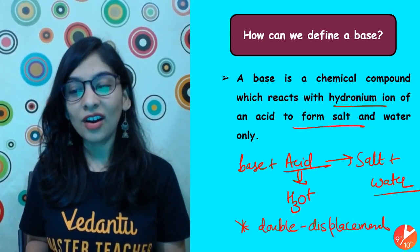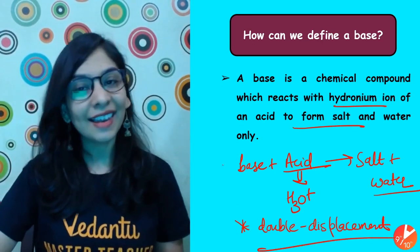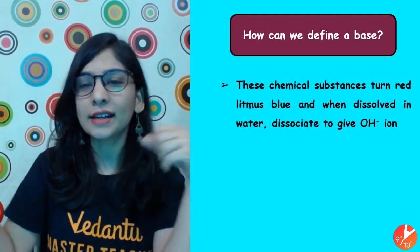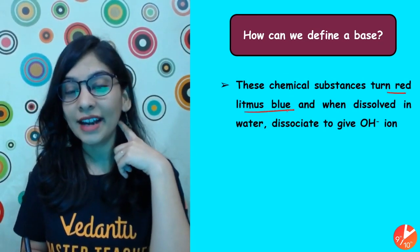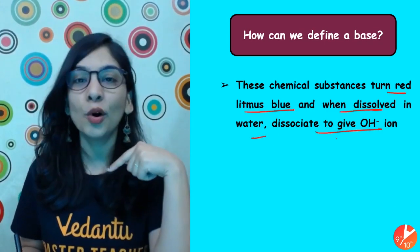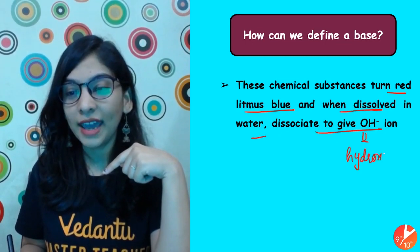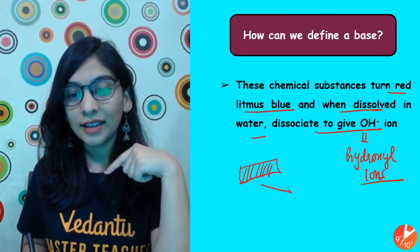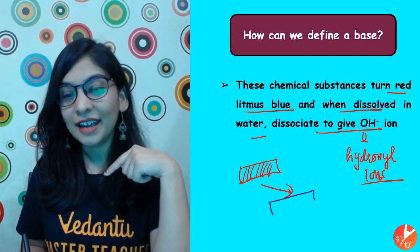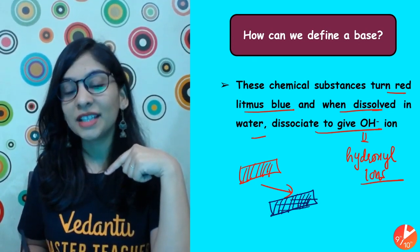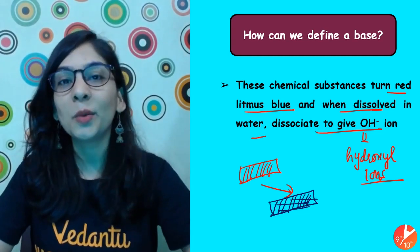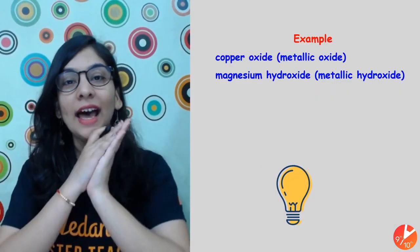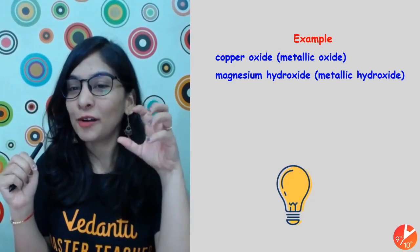It's a double displacement reaction because they exchange their ions. These are chemical substances that turn red litmus blue. When they dissolve in water, they generally give OH⁻ ions, called hydroxyl ions. If I take a red litmus paper and dip it into a base solution, the color will change from red to blue. When mixed with water, we get dissociation and then get hydroxyl ions.